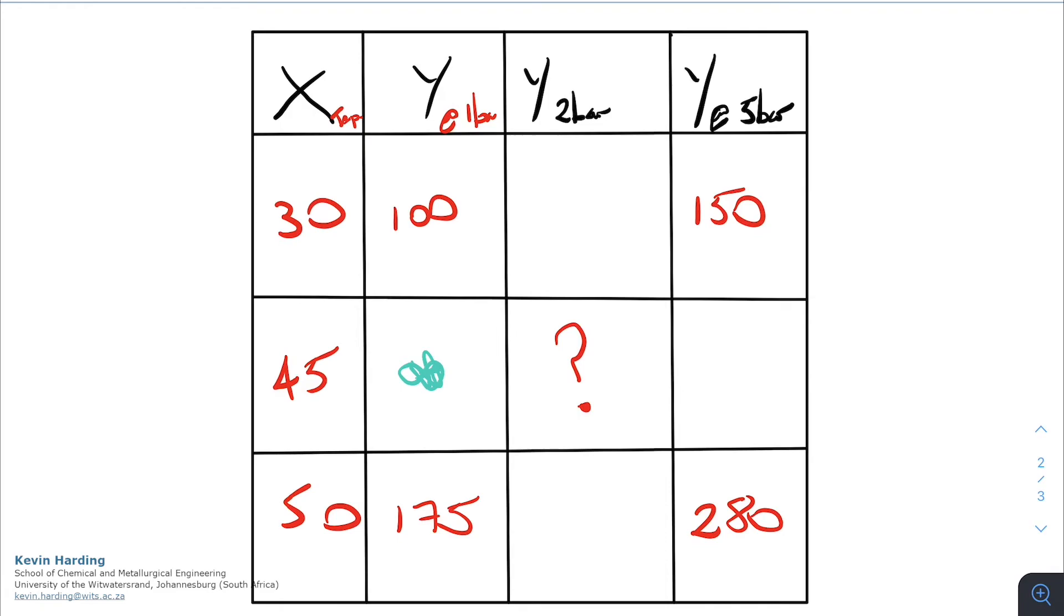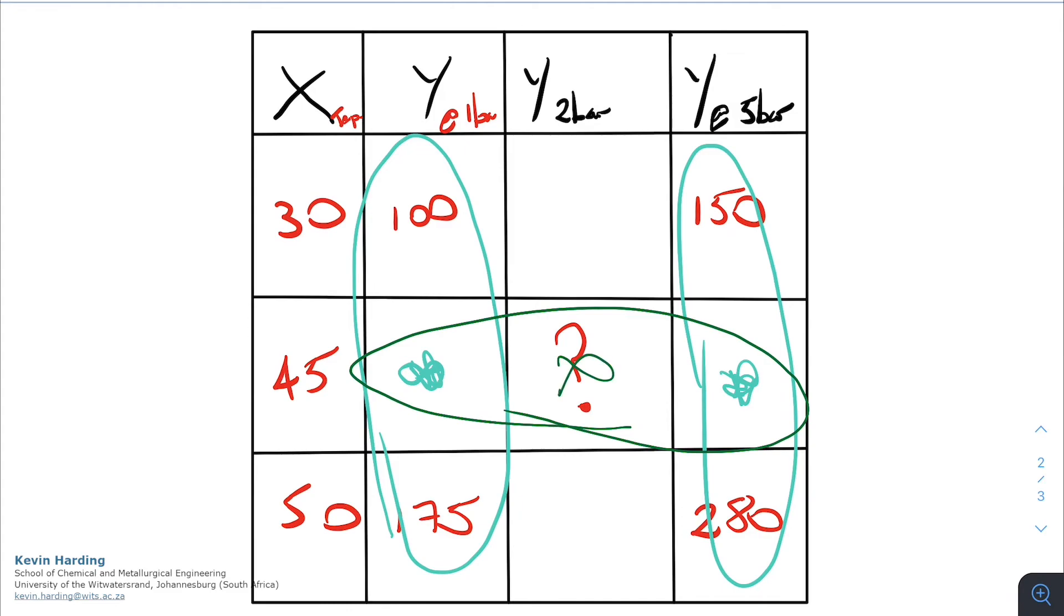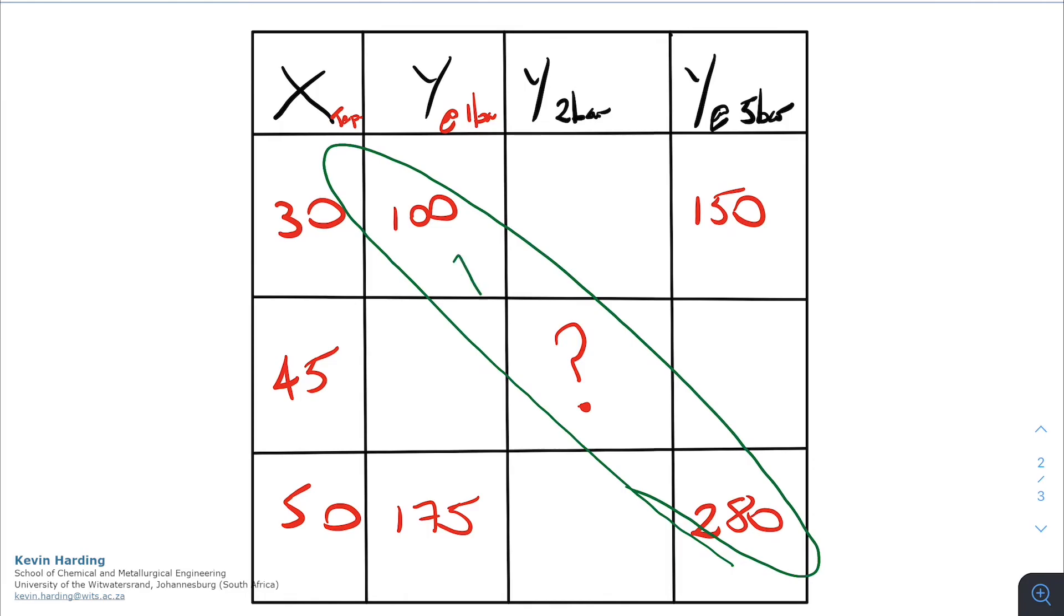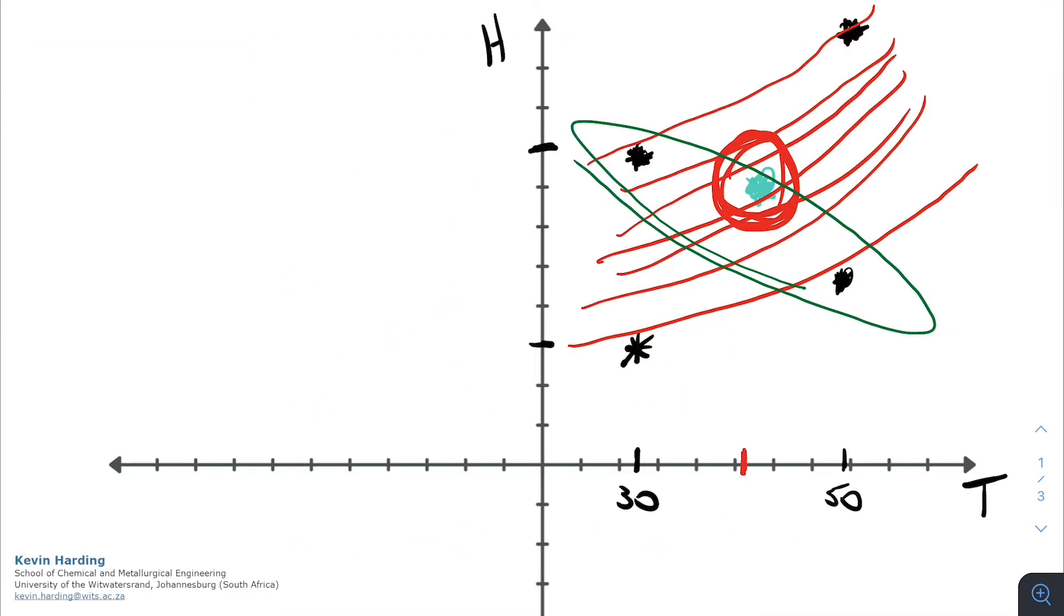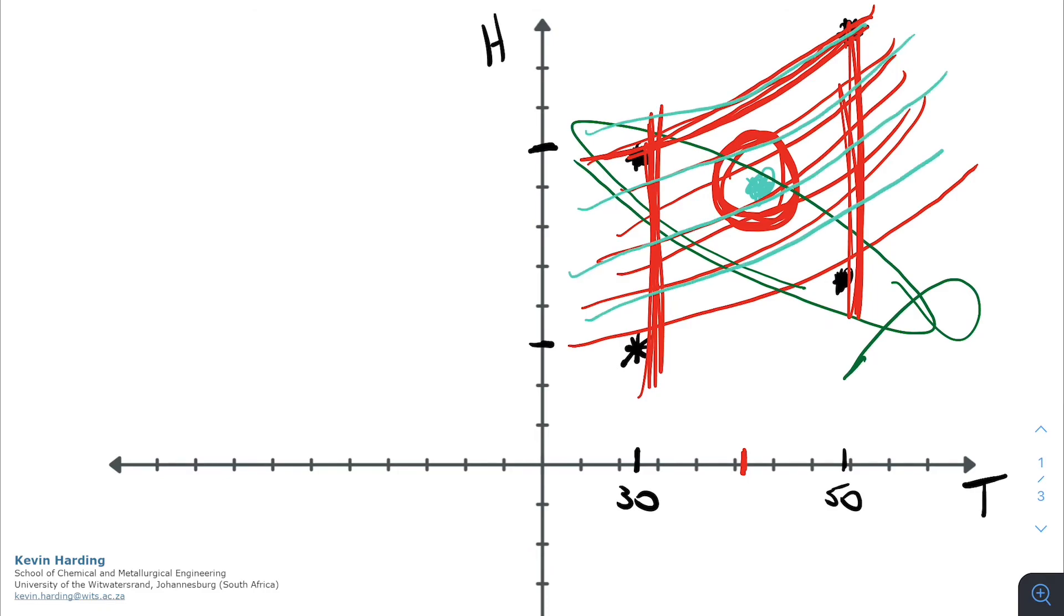We could just as easily have interpolated across the 100 and 175 and the 150 and 280, so we interpolate across those two values and then from that interpolate across the middle to get the middle value. Please note however, if you had tried to interpolate diagonally this would have been wrong. The reason diagonal interpolation is wrong is because we have function values here that are related to either a constant temperature up and down or a constant pressure along this line.